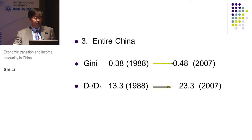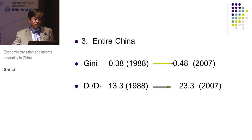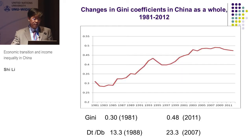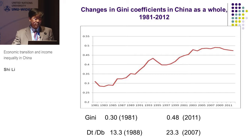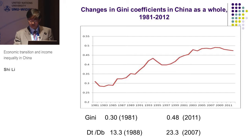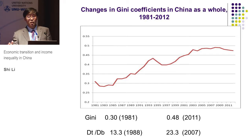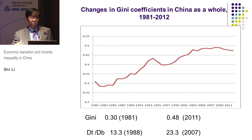Now let's come to China as a whole. The Gini coefficient was less than 0.4 in 1988, and now it is close to 0.48. Income ratios of the top decile to the bottom decile increased from 13 times in 1988 to 23 times in 2007. These figures come from different estimates — some from the World Bank and some from the National Bureau of Statistics.